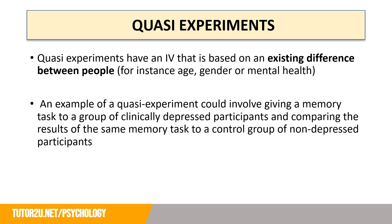The final type of experiment is quasi-experiments. Quasi-experiments have an IV that is based on an existing difference between people — for instance their age, gender, or mental health. An example could involve giving a memory task to a group of clinically depressed participants and comparing the results to a control group of non-depressed participants. This is a quasi-experiment because it involves an existing difference between people — they are either clinically depressed or they are not.